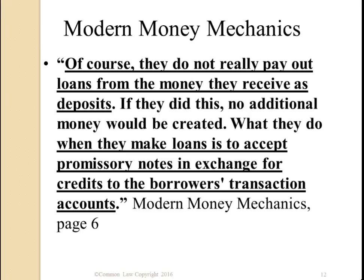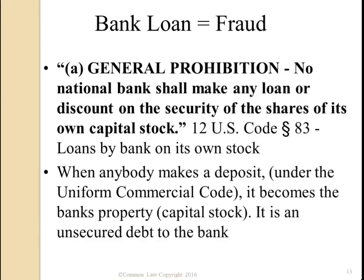Of course, they do not really pay out loans from the money they receive as deposits. If they did this, no additional money would be created. What they do when they make loans is to accept promissory notes in exchange for credits to the borrower's transaction accounts. They create a transaction account — it's just a temporary account for that transaction. This is found in Title 12, United States Code, Section 83: 'No bank shall make any loan or discount on the security of the shares of its own capital stock.' When anybody makes a deposit under the Uniform Commercial Code, the deposit becomes the bank's property — it is an unsecured debt to the bank.